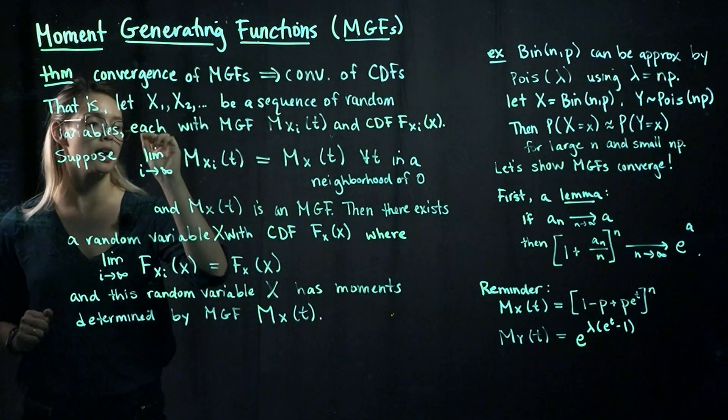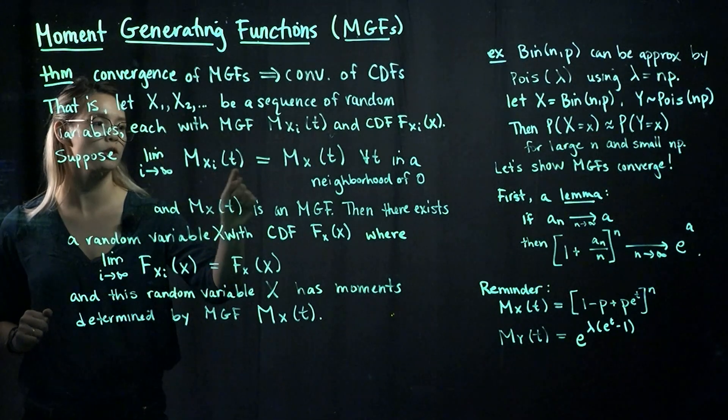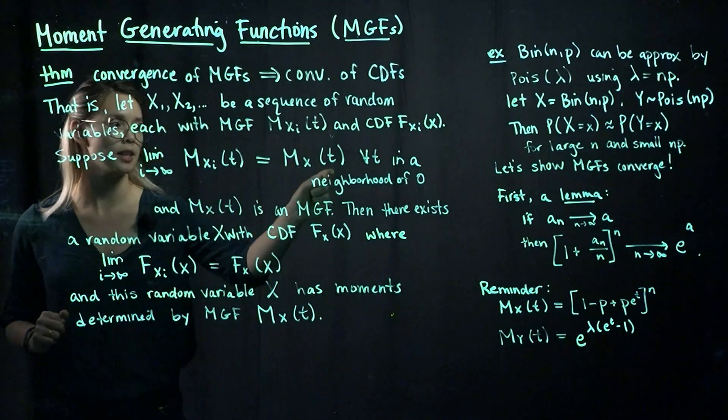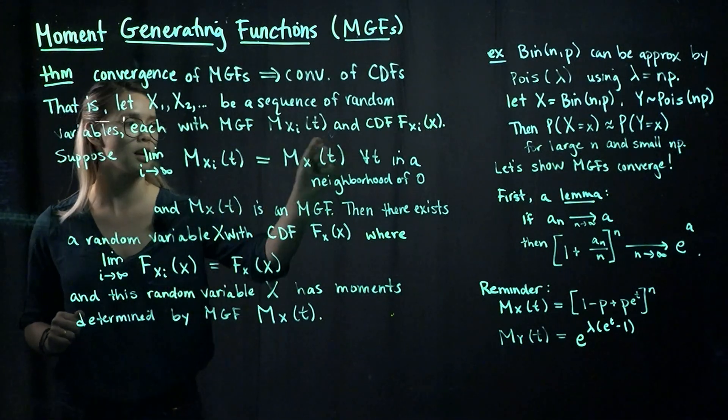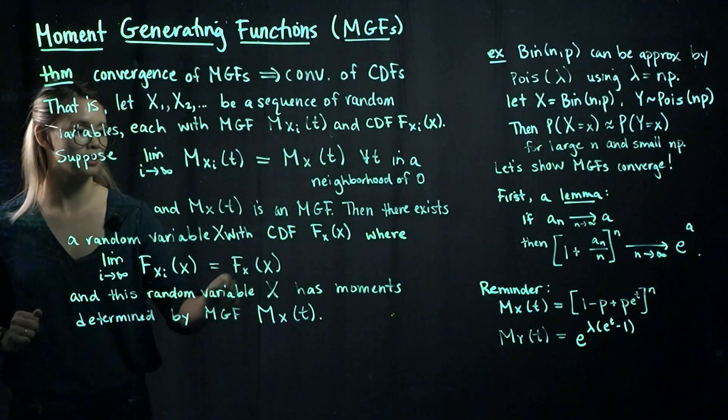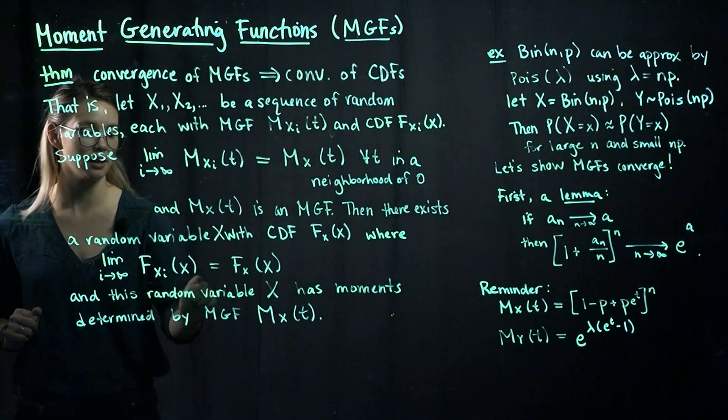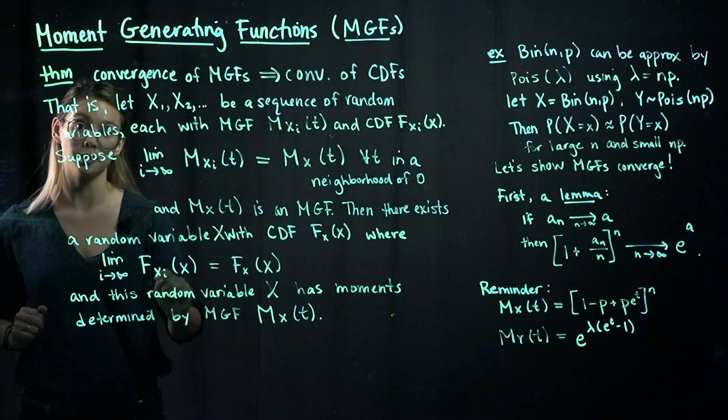So if we have the MGFs converge to this, and this ends up being an MGF, then we know that there's some random variable that has this MGF, and it has a CDF defined by the limit of the sequence of random variables' CDFs.